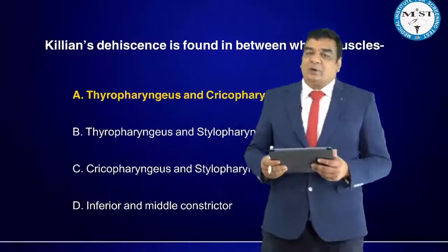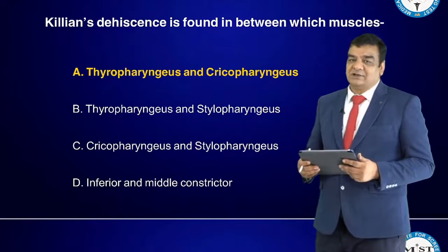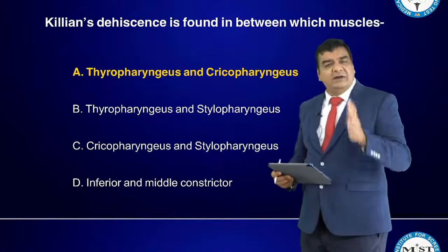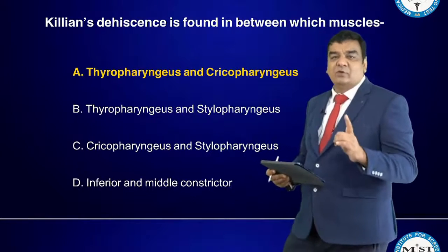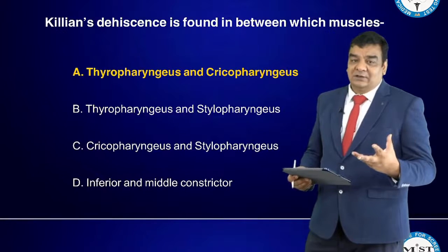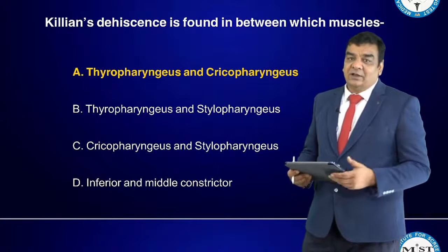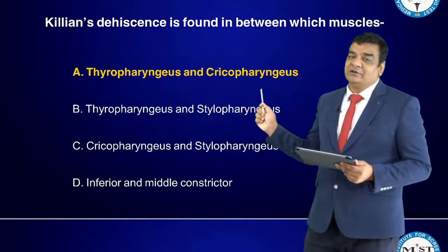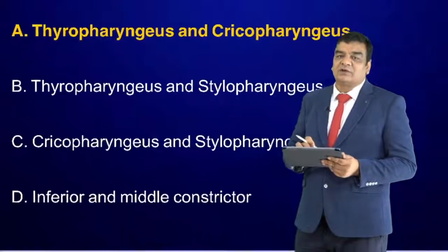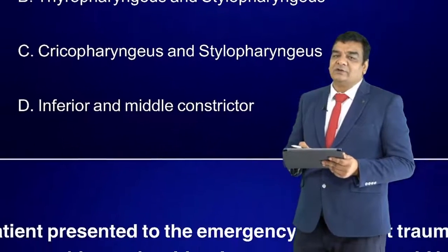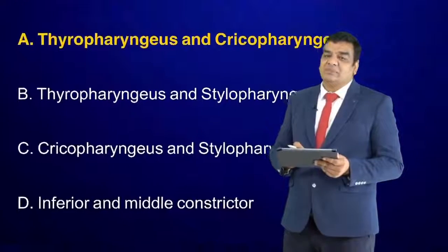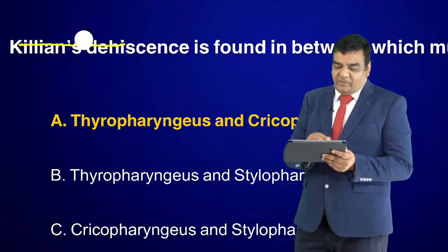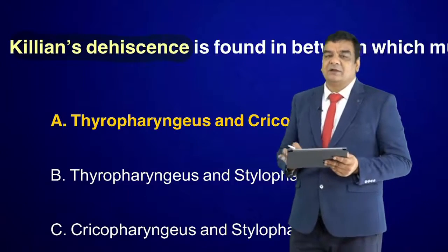Killian's dehiscence is found between which muscles? This repeat question (also asked in 2019) asks about the anatomical location. Previously asked 'through which muscle' (inferior constrictor), this time they asked between which two muscles: the thyropharyngeus and cricopharyngeus — not thyro and stylopharyngeus, not crico and stylopharyngeus, and not the inferior and middle constrictors. The best answer is thyropharyngeus and cricopharyngeus.